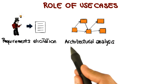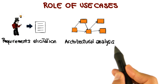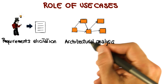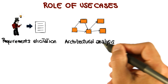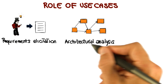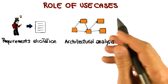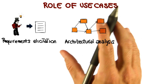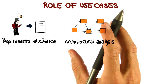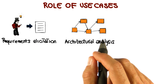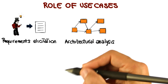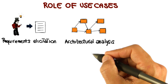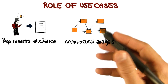As we will see when we discuss the unified software process, use cases can be used for architectural analysis. Use cases are the starting point for the analysis of the architecture of the system, and can help identify the main blocks of the system, and therefore help define the initial architecture. We'll talk more extensively about that.